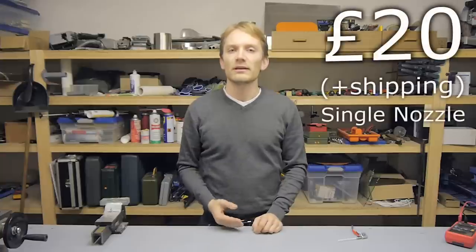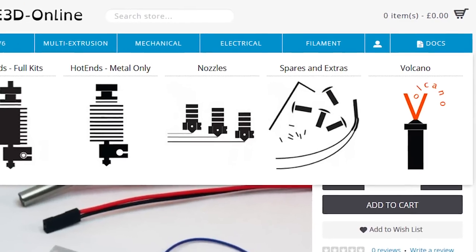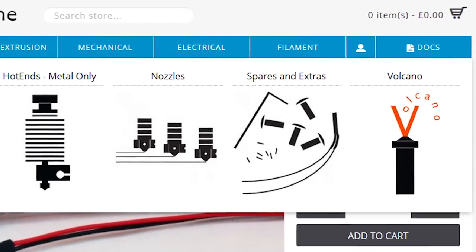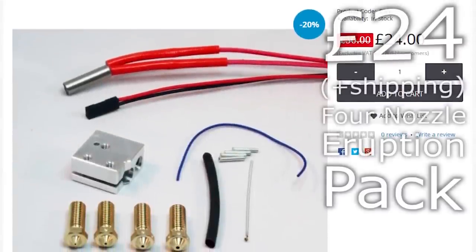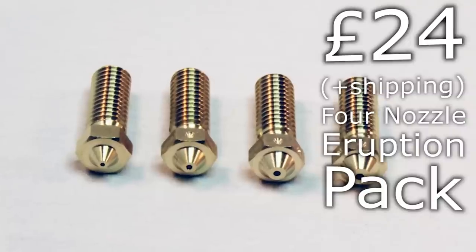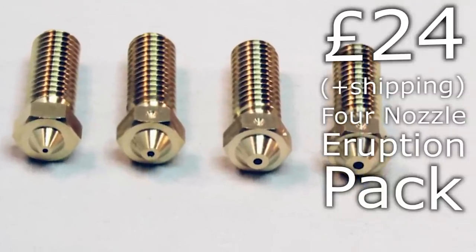And as always, I still need to mention the price, which is currently 20 great british pounds, so around 30 units in euros or US dollars. If you want a bit of a bigger variety, you can get the Volcano Eruption Pack, I guess you can see where they're going with this, for 25 pounds and get an additional three nozzles in different sizes, of which the largest one is 1.2mm.